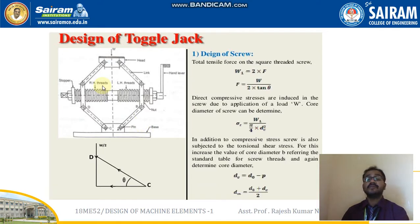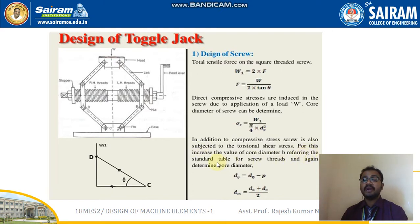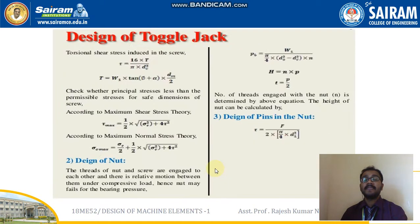Next is the design of the toggle jack, which is not in the syllabus but is very important. It is almost similar to the screw jack with some small changes. For the design of the screw in a toggle jack, the total tensile force on the screw is W1 = 2F, where F = W/(2 tan θ). Direct compressive stresses are induced; the core diameter is found from σ = W1 / (π/4 × DC²). For torsional shear stress, increase the core diameter by referring the standard table: DC = DO − P, DM = (DO + DC)/2. Torsional shear stress: τ = 16T / (π × DC³), with T = W1 × tan(φ + α) × DM/2.